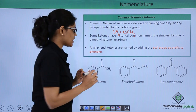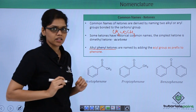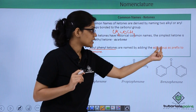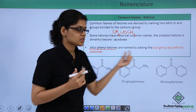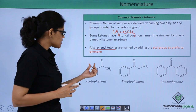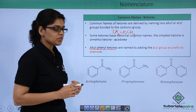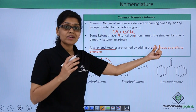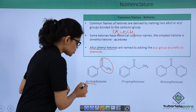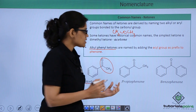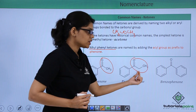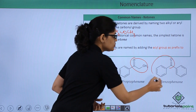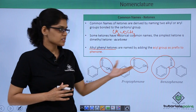In the case of alkyl phenyl ketones, the common name is obtained by adding the acyl group as a prefix to 'phenone'. For example, C6H5COCH3 is acetophenone, since CH3CO is the acetyl group used as a prefix. Similarly, a compound with three carbon atoms on the acyl side would be propiophenone, and the compound with a phenyl group on both sides would be benzophenone.